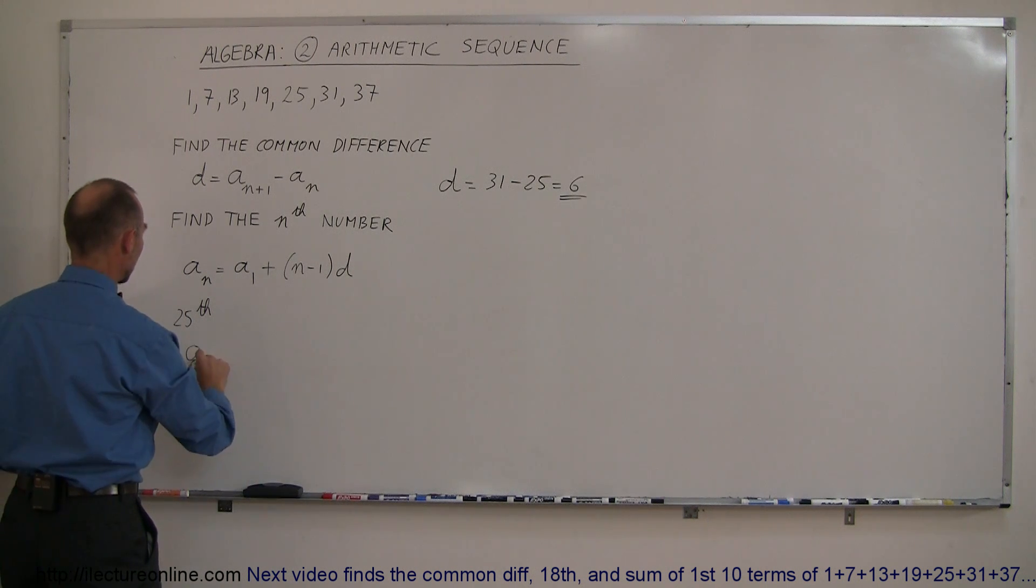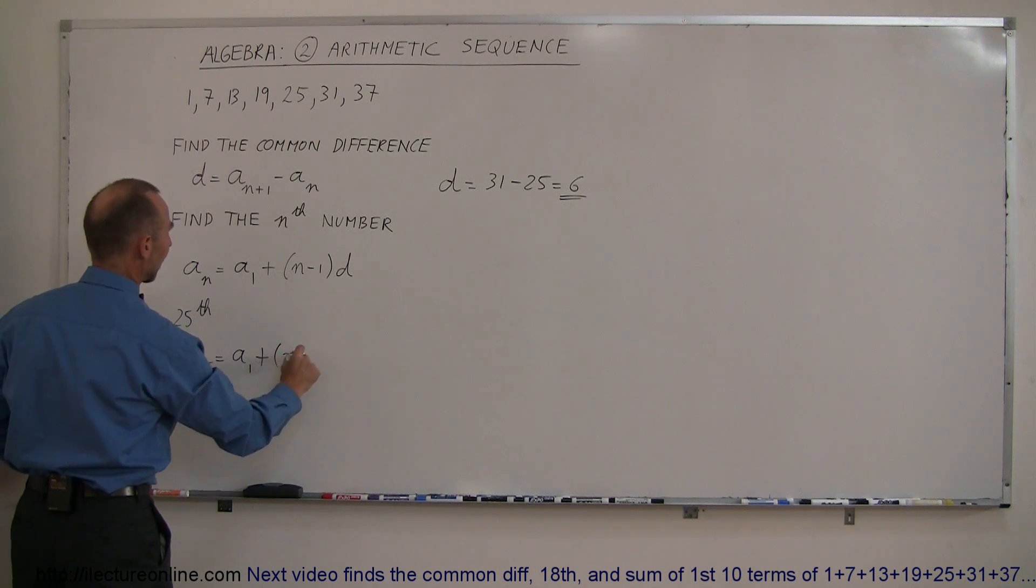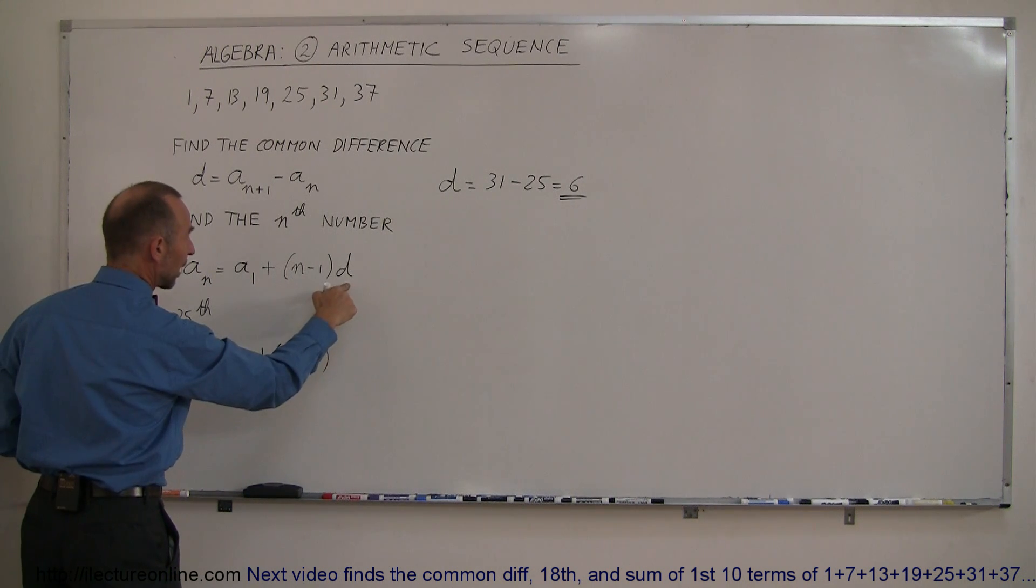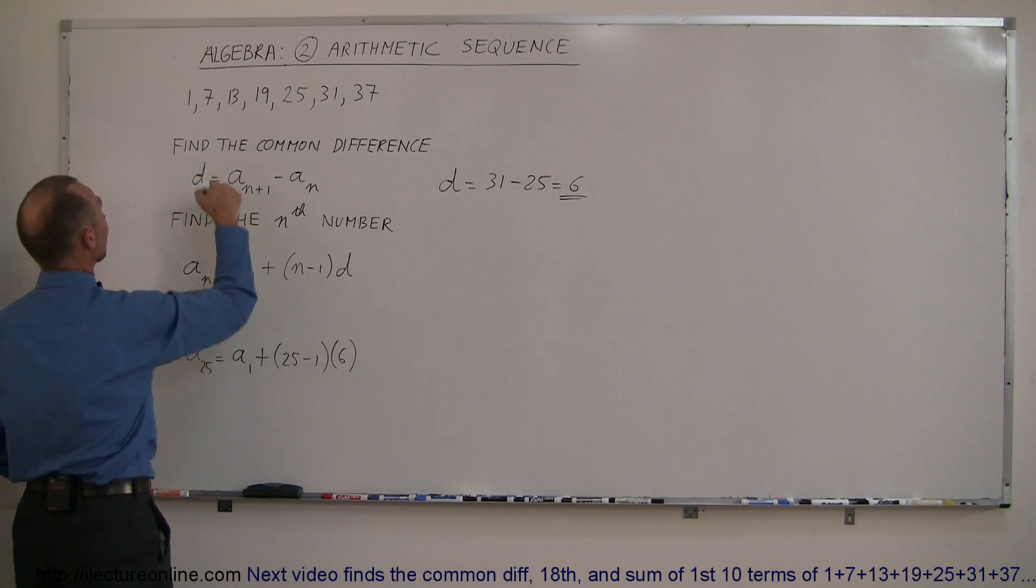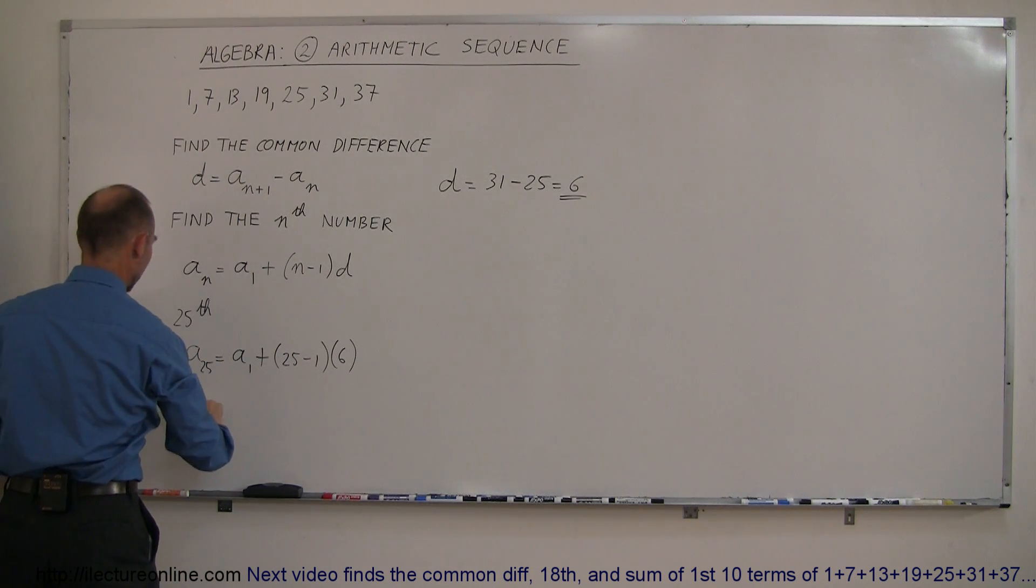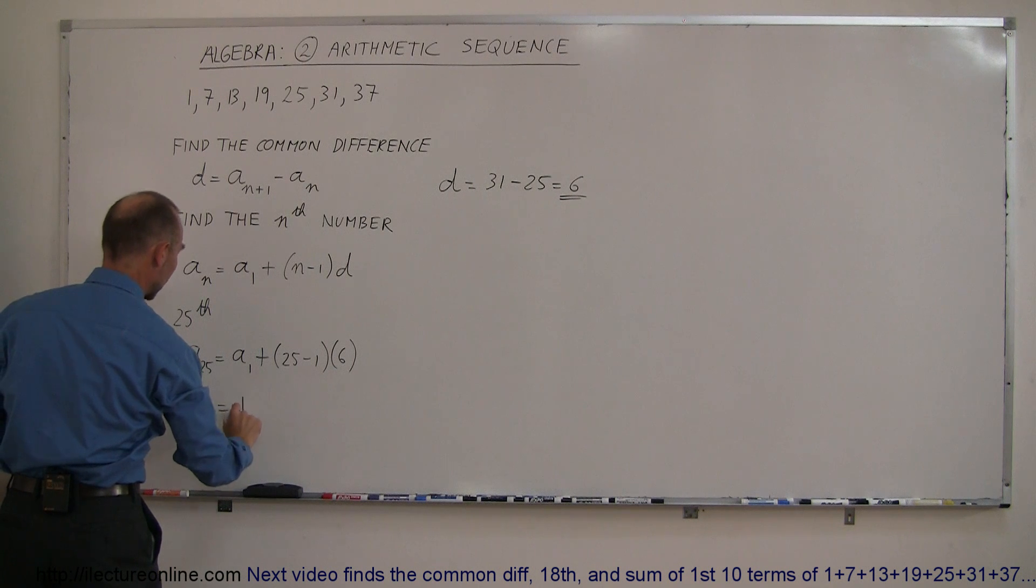So let's say we want to find the 25th number in this sequence. So a sub 25 is equal to the first one, a sub 1, plus 25 minus 1 times the common difference, which we just found out to be 6.